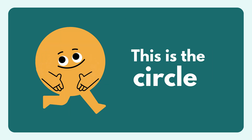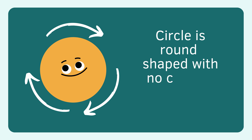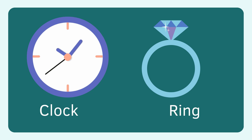Circle. Circle is round shaped with no corners or edges. Examples include a clock and a ring.